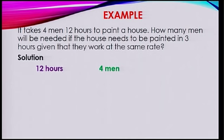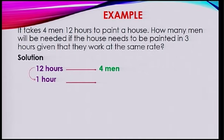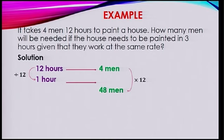We always start with the information given: 12 hours for 4 men. We find for 1 hour — 12 to become 1, we divide by 12. So if we are dividing by 12, on the other side we need to multiply by 12. Therefore, in 1 hour, if we want the house to be painted in 1 hour, we shall need 4 times 12 — that's 48 men.